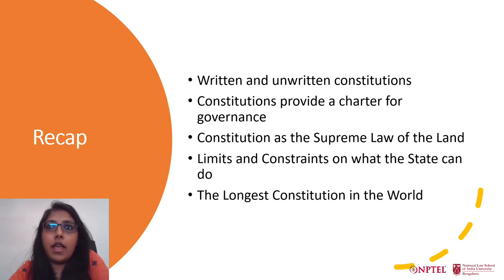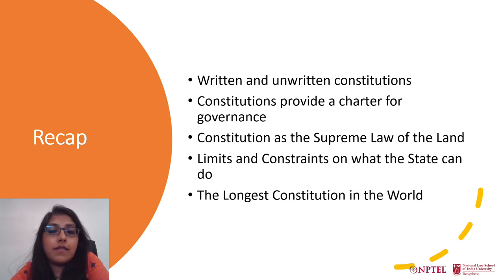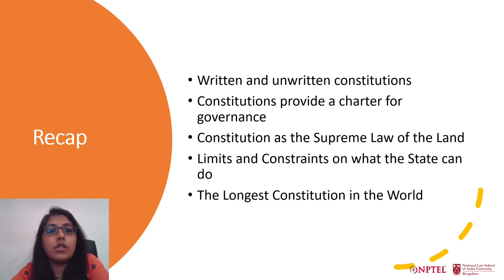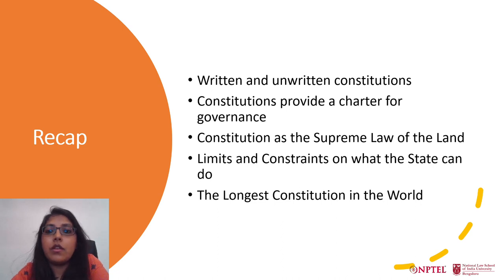In the previous lecture we discussed that a constitution can have written and unwritten components. Likewise, there can be constitutions that are entirely unwritten. The British constitution is an interesting example — it is not written down in one single document but comprises many documents and many unwritten conventions. So you can have constitutions written in a single document, mostly written but supplemented with conventions, or completely unwritten.